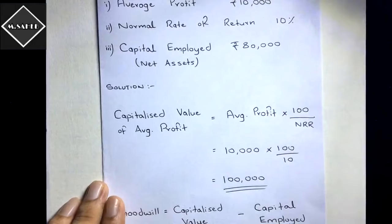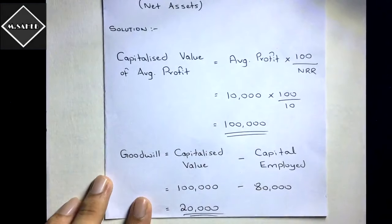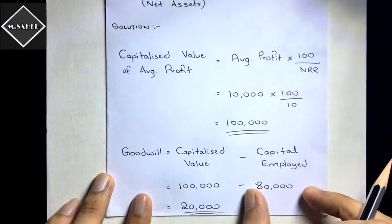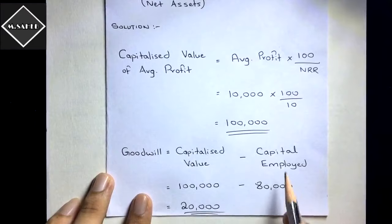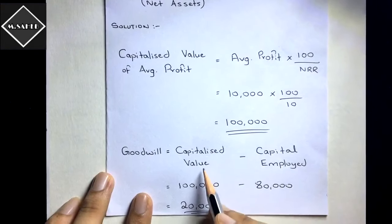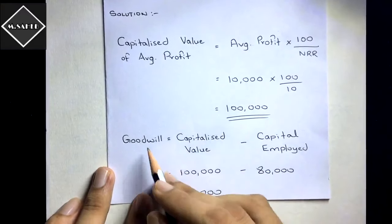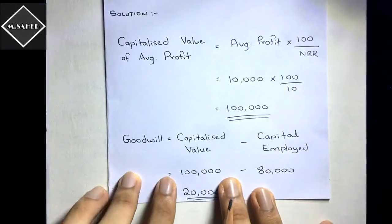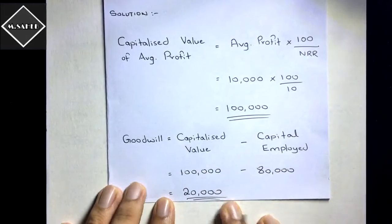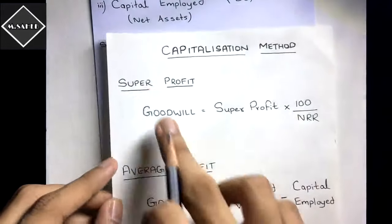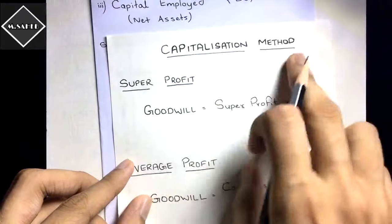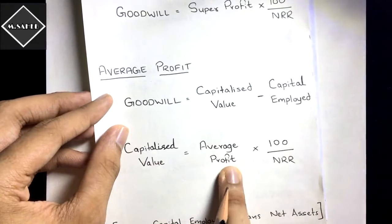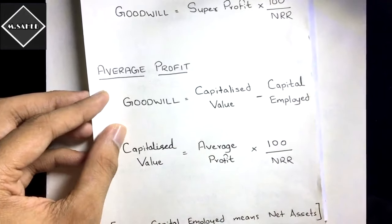Now apply the goodwill formula: Capitalized Value − Capital Employed = 1,00,000 − 80,000 = 20,000. So the value of goodwill is 20,000. To summarize: in capitalization of super profit, Goodwill = Super Profit × 100 / NRR directly. In capitalization of average profit, first capitalize the average profit, then subtract the capital employed to get the goodwill.